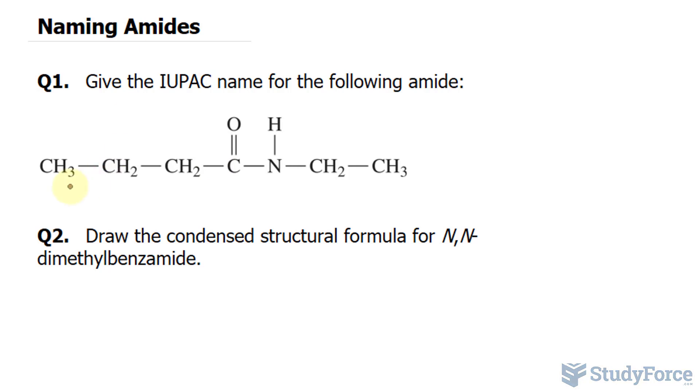You can see remnants of the carboxylic acid right here. In fact, this would be called butanoic acid if this part of the molecule was replaced with OH. So remember that the longest chain here is B-U-T for but, the prefix.